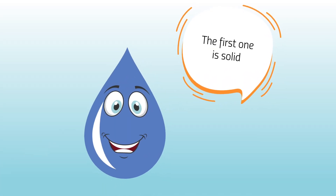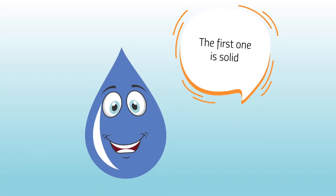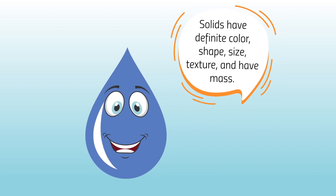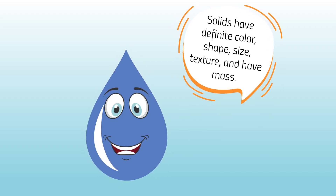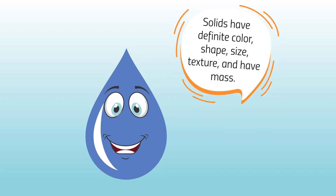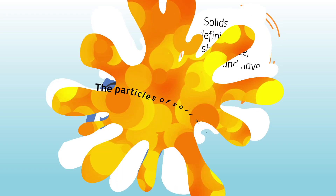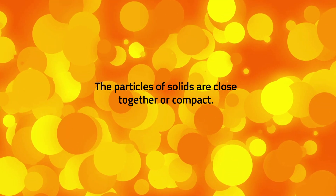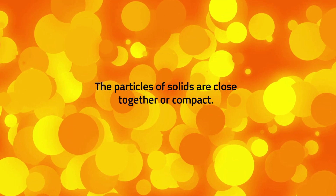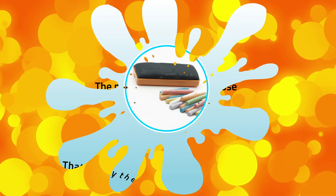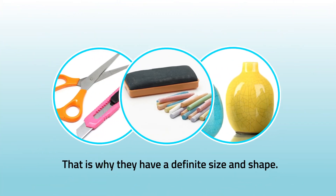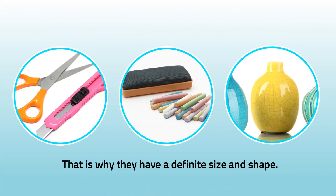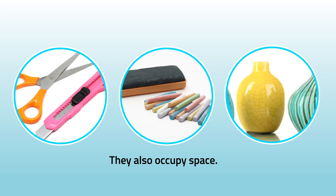The first one is solid. Solids have definite color, shape, size, texture, and have mass. The particles of solids are close together or compact. That is why they have a definite size and shape. They also occupy space.